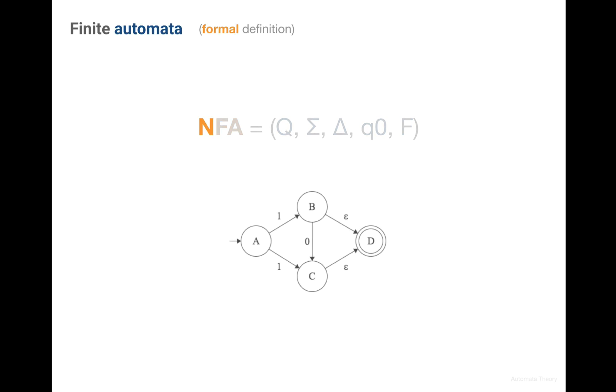And to reiterate on the non-determinism specifically, these are multiple transitions on the same character, and epsilon transitions in case of an epsilon NFA.